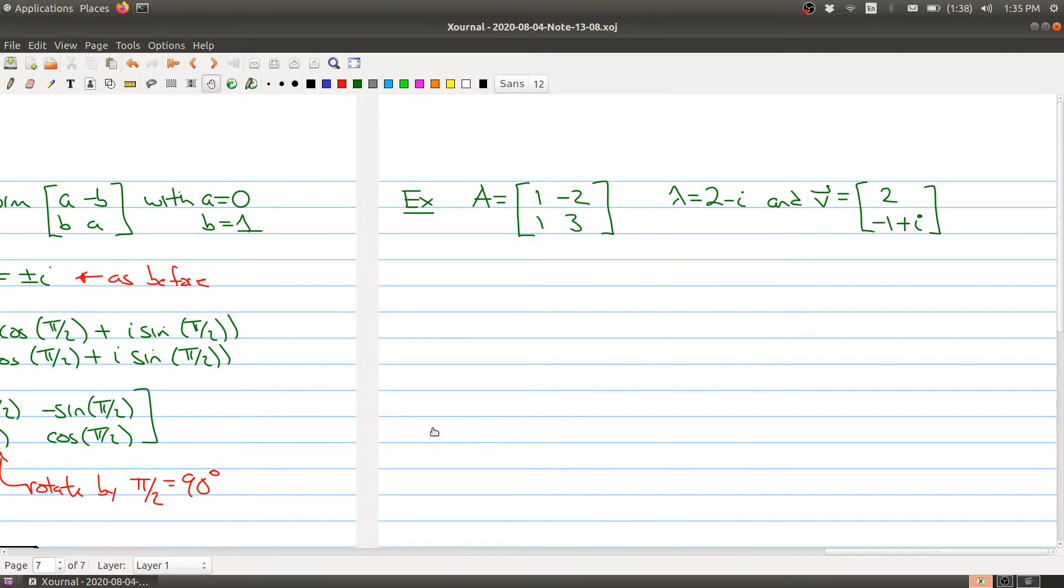Let's say we have a matrix A which looks like 1, negative 2, 1 and 3, and then lambda equals 2 minus i, and V, our complex eigenvector that goes with it, is 2 minus 1 plus i. This is our situation. Now I'm going to take P to be the matrix where the first column is the real part of V and the imaginary part of V goes into the second column. So we have 2 minus 1, 0 and 1.